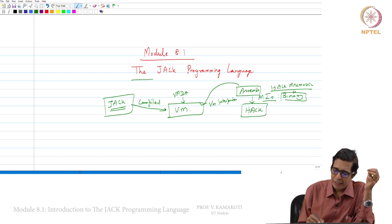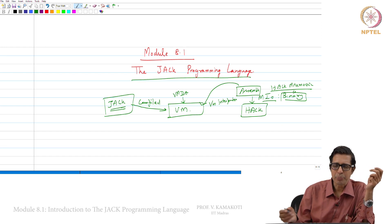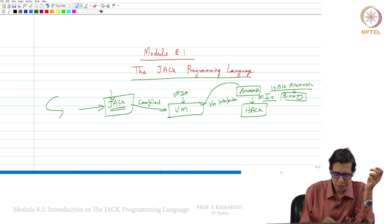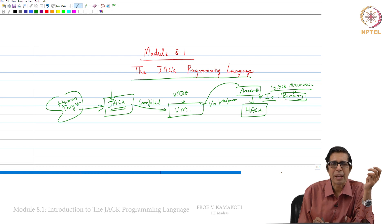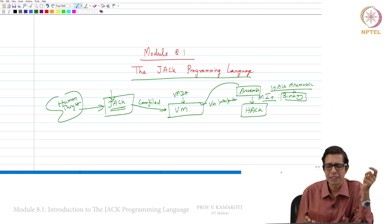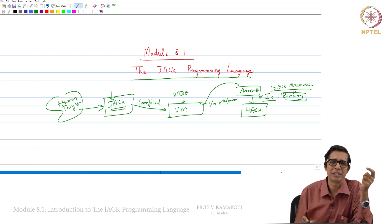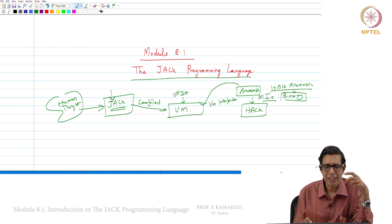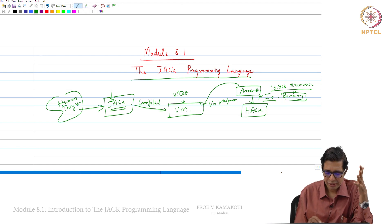In modules 8.1 and 8.2 we will learn how to program in JAK — how to take a human thought and convert it into a JAK program. JAK is an abridged version of Java. We will look at how to write that thought in JAK.